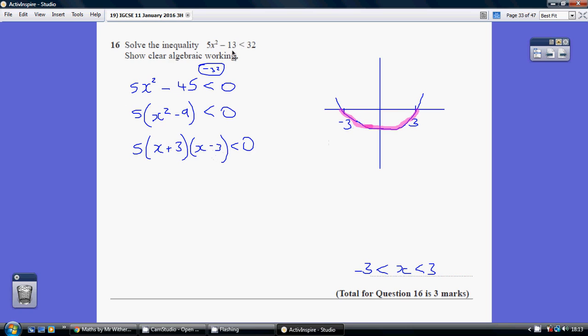We're looking for all the solutions which is less than 0, the bit below the axis. So we want this sweep of values between minus 3 and plus 3. So x is less than 3 but greater than minus 3.